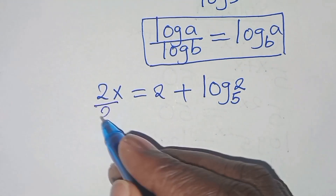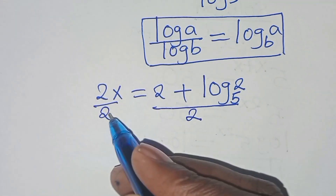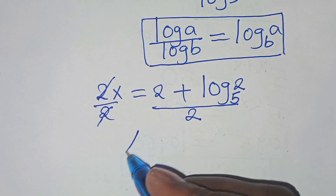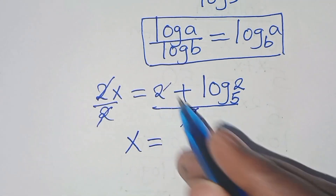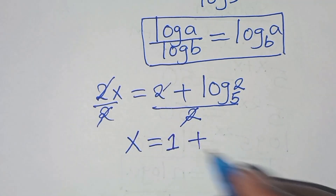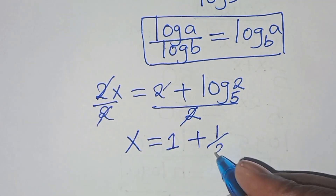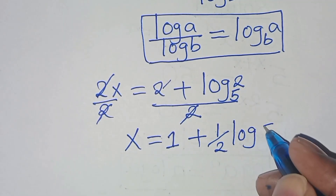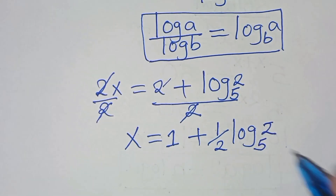The next step is to divide both sides by 2, so that the value of x equals 1 plus one-half times log base 5 of 2. This is the value of x.